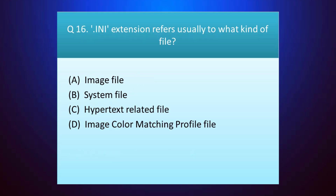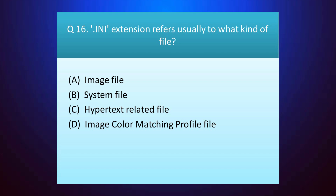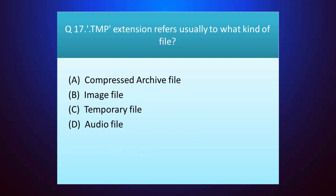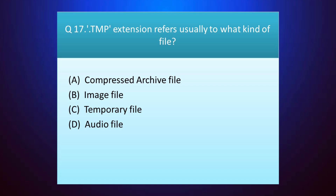Question number sixteen: .ini extension refers usually to what kind of file? Your time starts. The answer is option B — system file. Question number seventeen: .tmp extension refers to what kind of file? Your time starts. The answer is option C — temporary file.